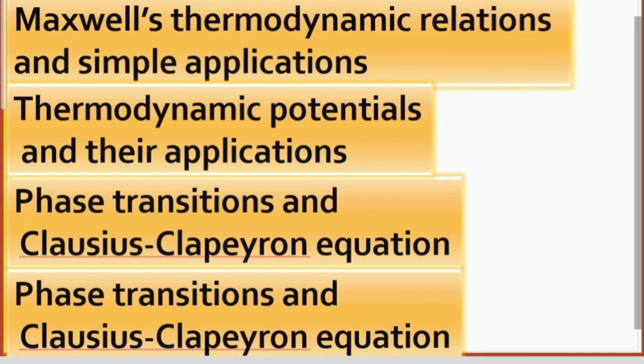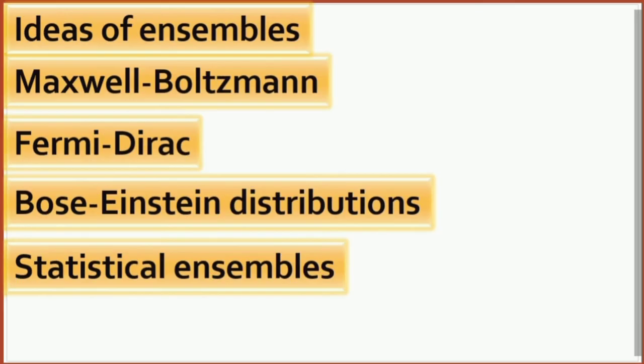Next you will see there will be ideas of ensembles in statistical. Maxwell-Boltzmann distribution will be there, questions related to this. The Fermi-Dirac will be there, some statistics and ensembles related questions will be there. We will have questions on Bose-Einstein statistics. The system will be given in that way and we need to solve the questions. Next, what we will see is there will be some questions related to the partition function also.